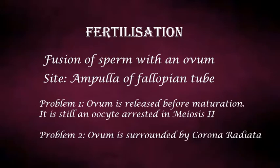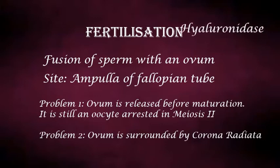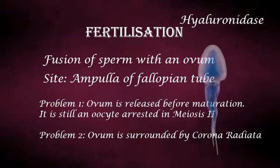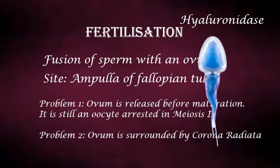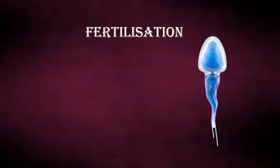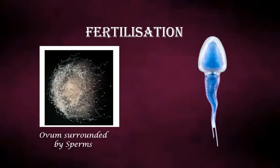The second problem is that the ovum is surrounded by the corona radiata, which protects the oocyte as it travels along the fallopian tube to reach the ampulla. This layer is difficult to penetrate, and the sperm uses the enzyme hyaluronidase to break it. This enzyme is present in the acrosome of the sperm, but the amount of hyaluronidase in one sperm is not enough — many sperms contribute to breaking it down. Finally, only one sperm enters the cytoplasm of the secondary oocyte.